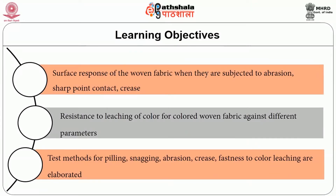Objectives of the module: the module aims to discuss three points in detail. Objective one: surface response of the woven fabric when subjected to abrasion, sharp point contact, crease, etc. Objective two: resistance to leaching of colour for coloured woven fabric against different parameters is touched upon in this module. The last objective covers test methods for pilling, snagging, abrasion, crease, and resistance to colour leaching, which are elaborated in this module.